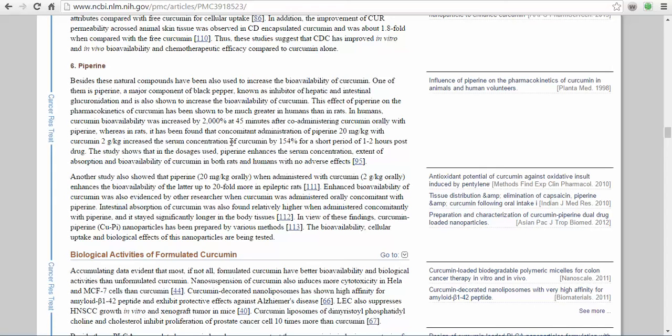So the effect of piperine on the pharmacokinetics of curcumin has been shown to be much greater in humans than in rats. So it's even better absorption and more bioavailability when humans use it than rats. In humans it was increased 2,000 percent, whereas in rats...